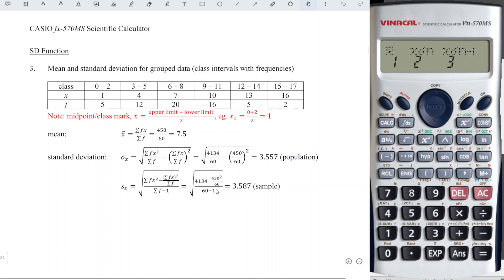So if let's say we want to determine the sample value, then we just have to press 3. So we obtain 3.587, relative to the nearest 3 decimal points. And for the population,